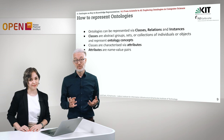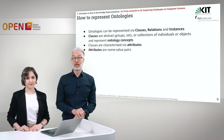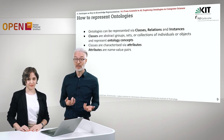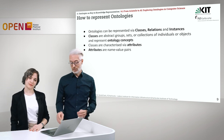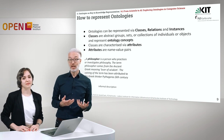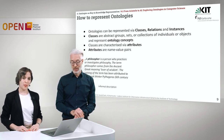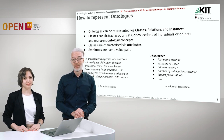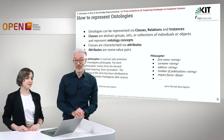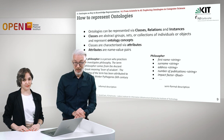So how do we represent these ontologies — what are the building blocks? We need classes: abstract groups, sets, or collections of individuals or objects, to represent ontology concepts. Those classes are usually characterized by attributes, which are named value pairs. Class descriptions can be rather informal — for example, an informal description of what a philosopher is. They can also be semi-formal, giving all of the attributes of the philosopher: first name, surname, address, number of publications, impact factor. But in the end we want a formal description based on formal mathematical logic.